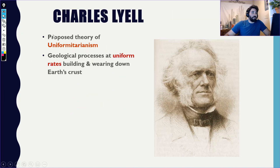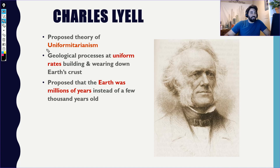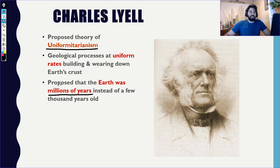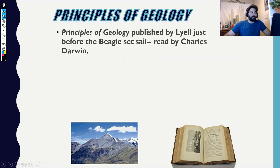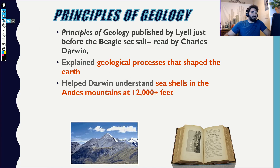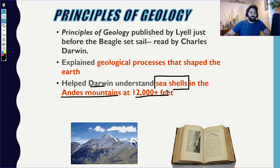Then Charles Lyell came up with the idea of uniformitarianism — that geological processes on Earth happen at very consistent, slow rates. This gave us the idea that Earth wasn't actually just 10,000 years old but actually millions of years old. He wrote a book called The Principles of Geology. After Darwin read that book, it helped him explain why in the Andes Mountains, which are 12,000 feet above sea level, he was able to find seashells.